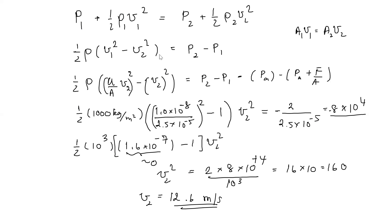This subtraction gives you negative 2 divided by 2.5 times 10 to the minus 5. Now, V1 and V2 are related. According to the continuity equation, A1 V1 equals A2 V2, so we can find V1 in terms of V2. We have one-half rho times (small a over large A, the needle's cross-section area divided by the plunger area, times V2 squared) minus V2 squared. Plugging in all the numbers gives the result.